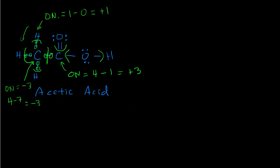For the two oxygens in acetic acid, let's count the electrons assigned to each. Counting up all electrons assigned to the top oxygen gives eight, and similarly the other oxygen also gets eight electrons assigned. So the oxidation number for both oxygens is six minus eight, which is negative two. Both oxygens in acetic acid are in the −2 oxidation state.